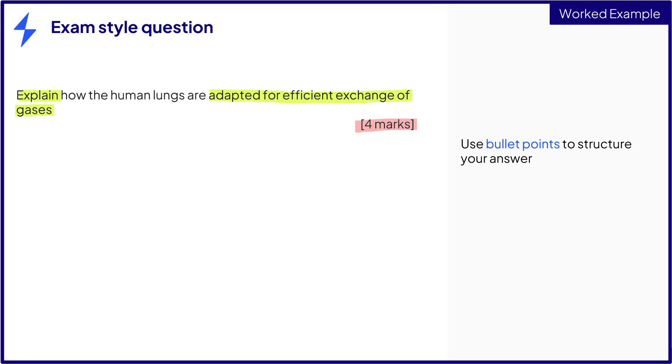We have many alveoli in the lungs. We need to explain this. Why is it important? Many alveoli give the lungs a large surface area. Notice the use of the word 'so' here to help with your explanation, which keeps it simple.